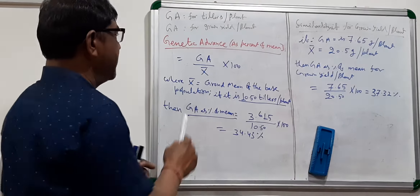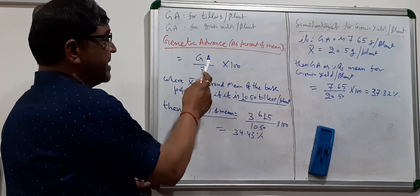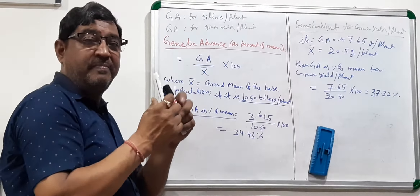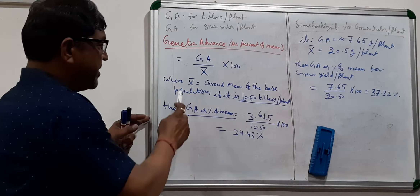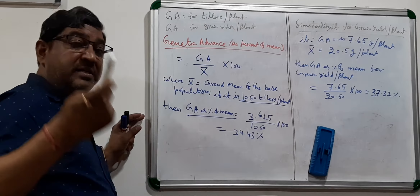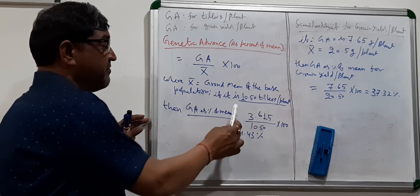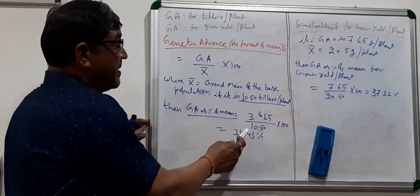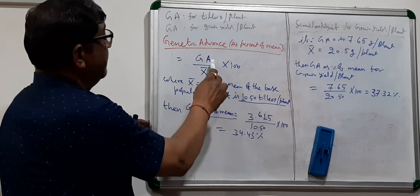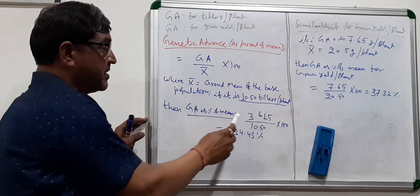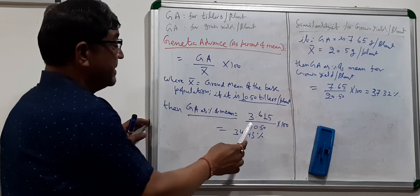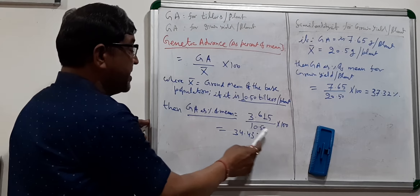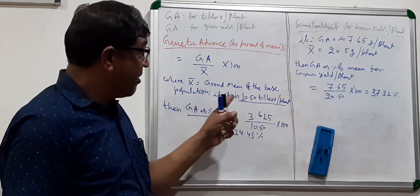Genetic advance as percent of mean = (genetic advance / grand mean of the base population) × 100. If the grand mean of the population is 10.5 tillers per plant, then GA as percent of mean = (3.615 / 10.5) × 100 = 34.43 percent for tillers per plant.